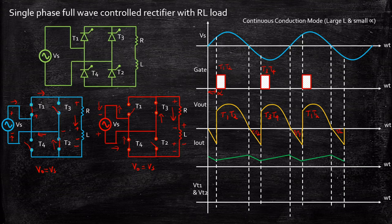This waveform repeats for n number of cycles. Both positive and negative cycles are completely controlled with the help of a fully controlled rectifier. A full wave controlled rectifier controls both positive and negative half cycles to convert AC to DC — that is why we call this a full wave controlled rectifier.